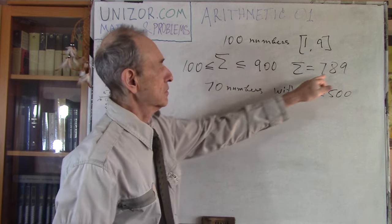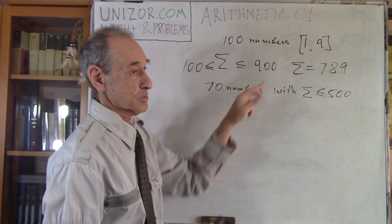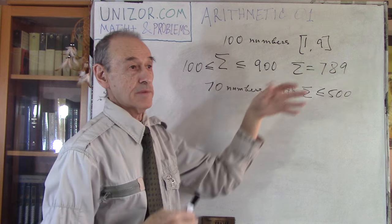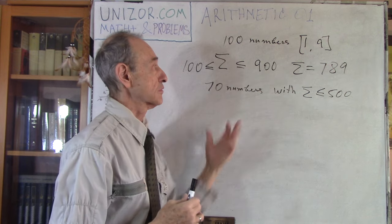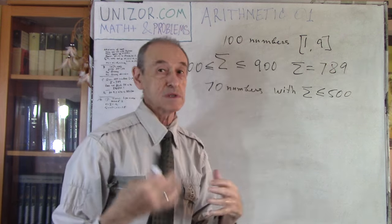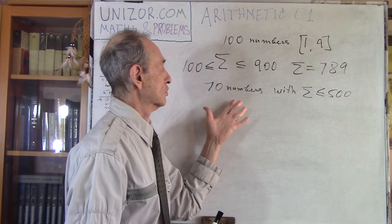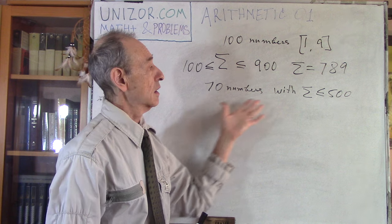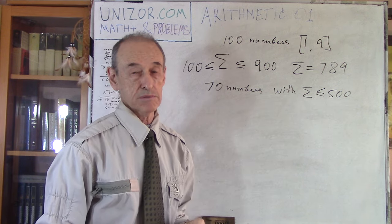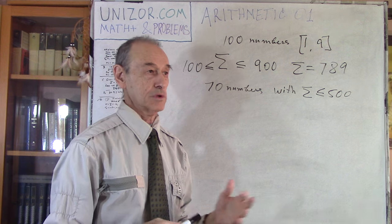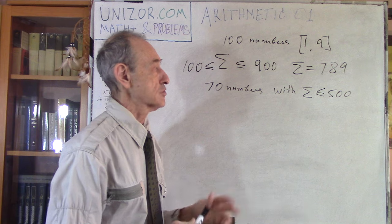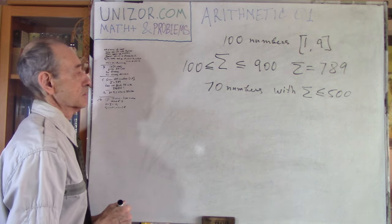You see, this sum is closer to the maximum. So, most numbers are large numbers. That's why I'm asking, is it possible from all those mostly large numbers to choose 70, which is much more than half, but with the sum less than 500. Is it possible or not? Well, it's a very simple thing. The question is very simple to answer.